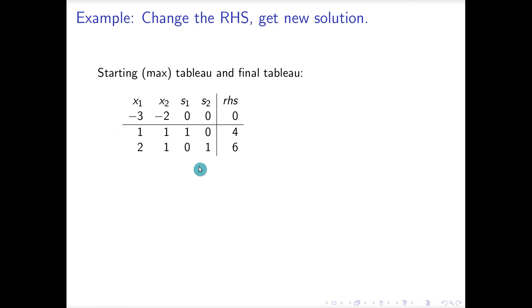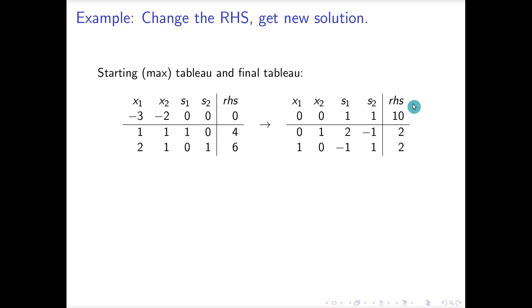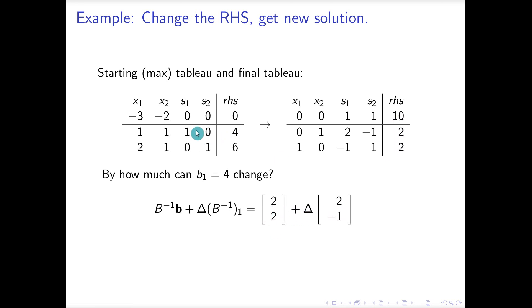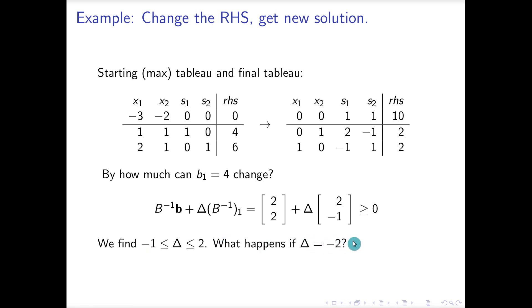Starting with this small max problem, here's our final tableau. For extra practice: by how much can we change this value and keep the current basis feasible? We compute B-inverse times b plus Delta times the first column of B-inverse. That gives us 2 and 2 plus Delta times the first column under s1, which is 2 and -1. We need that to be greater than or equal to 0, so Delta must be between -1 and 2.